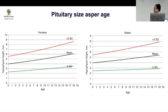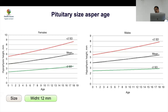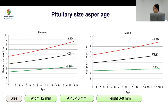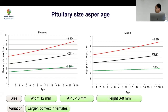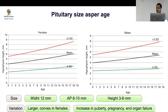Pituitary size increases with age and is larger in girls than boys. A normal pituitary has a width of 12 mm, AP of 8–10 mm, and height of around 8 mm. In girls it can be bigger and tends to be convex rather than concave. Size increases with puberty, pregnancy, and end-organ failure like hypothyroidism and hypogonadism.